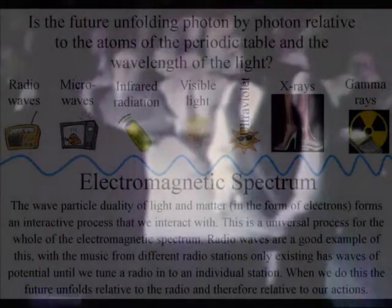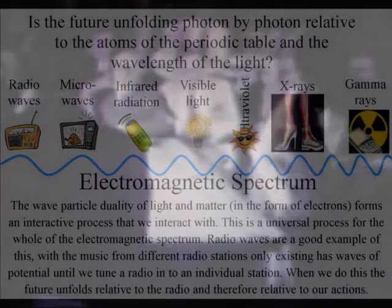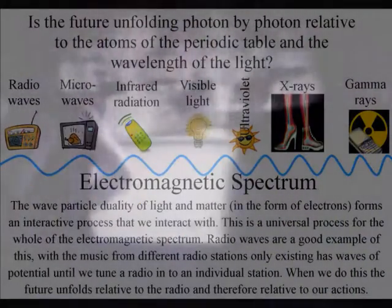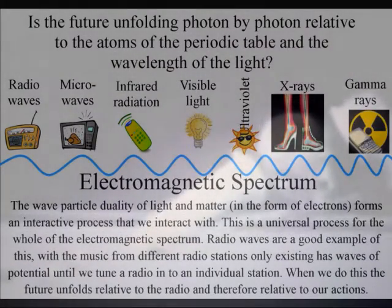Electromagnetism forms one interactive field that connects all things together. We have light photon oscillations or vibrations forming the movement of positive and negative charge with the continuous flow of electromagnetic fields.